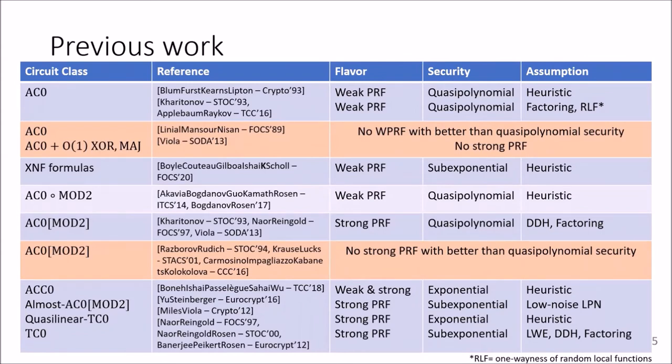Here you can see an overview of previous work. If you want to look at it more thoroughly, you can pause or go to our paper. But what I want to stress is the following. First, there are basically two approaches to constructing weak PRFs. One is to build on standard assumptions like factoring, decisional Diffie-Hellman, learning with errors.